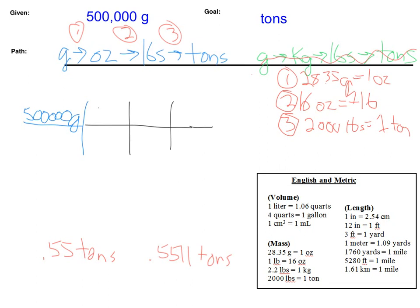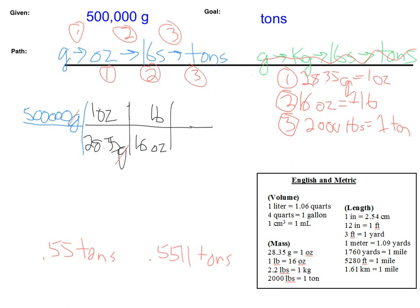Let's go through and solve for this one. Since we have grams on top, we need to put grams on bottom — pulling in our first, second, and third conversions. So we have 28.35 grams on bottom, and that was equal to one ounce. Grams on top cancel grams on bottom. Now since we have ounces on top, we need to put ounces on bottom: 16 ounces are equal to one pound. Ounces on top cancel ounces on bottom. And our last one: 2,000 pounds per one ton. Pounds on top cancel pounds on bottom.